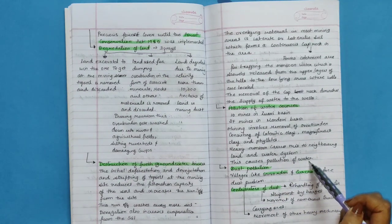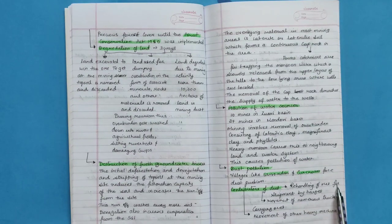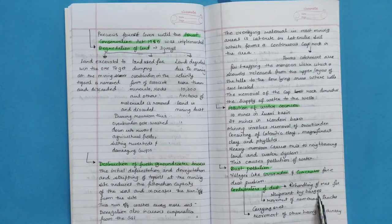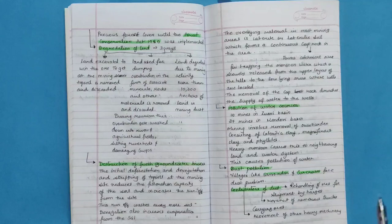Heavy monsoon carries this to neighboring land and water system. This causes pollution of water. Dust pollution. Villages like Sirsaim and Curtorim face dust pollution. Contributors of dust: rehandling of ores for shipment by barge, movement of numerous trucks carrying ores, movement of other heavy machinery.